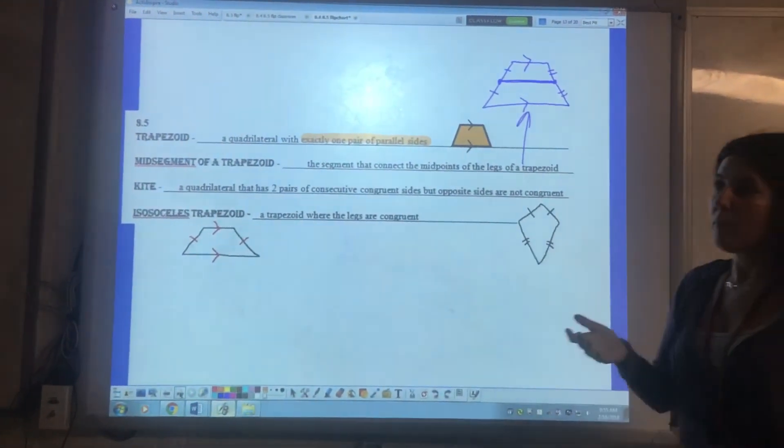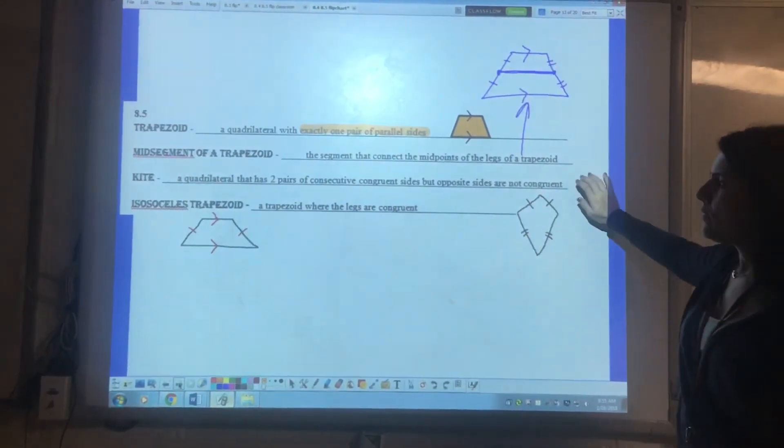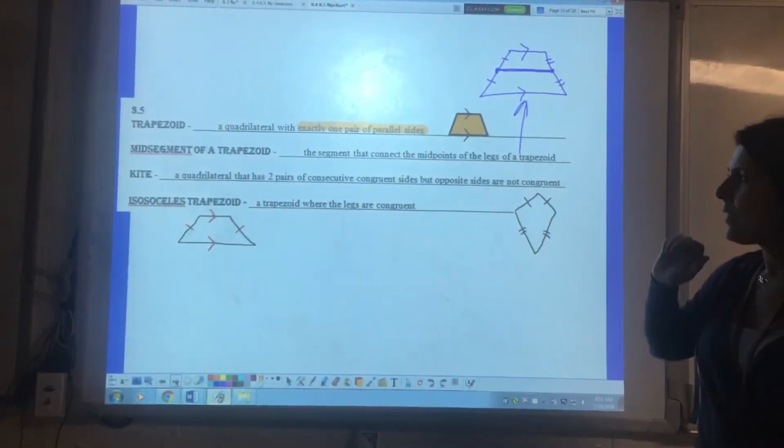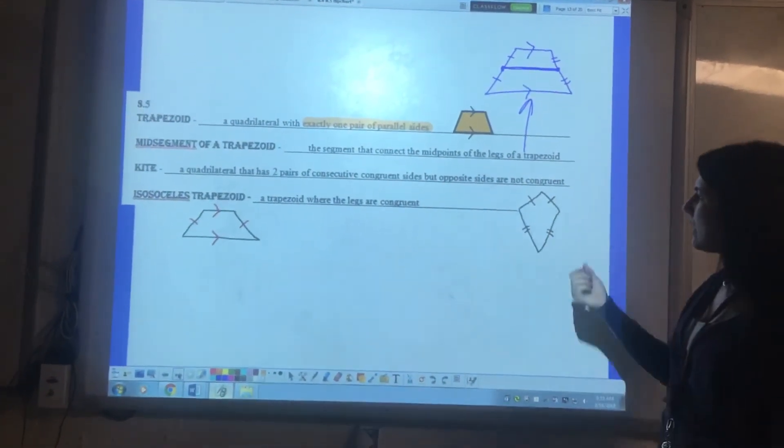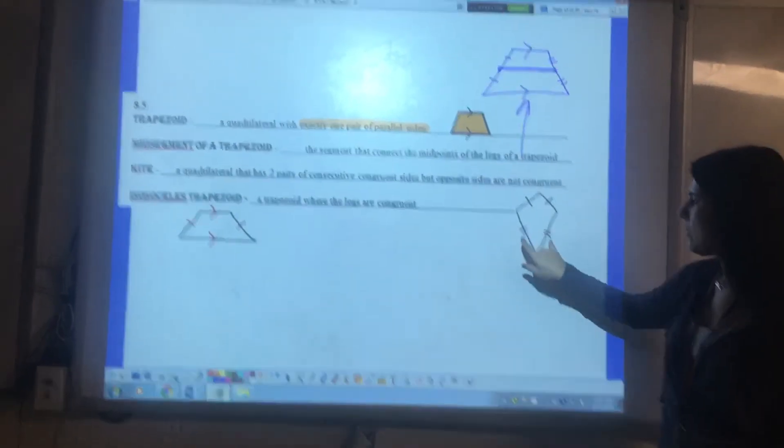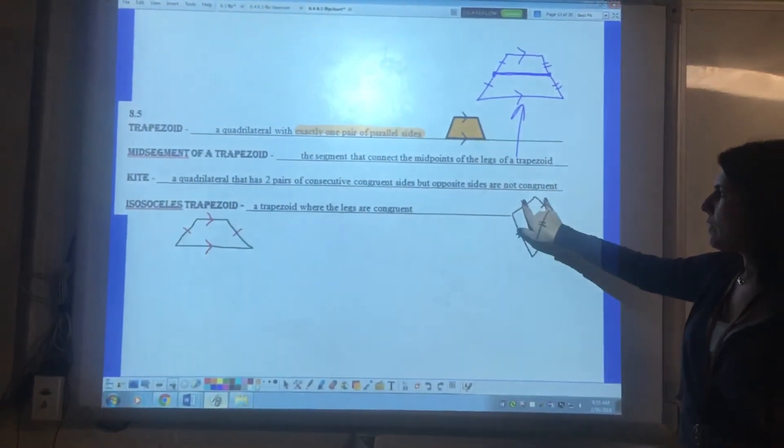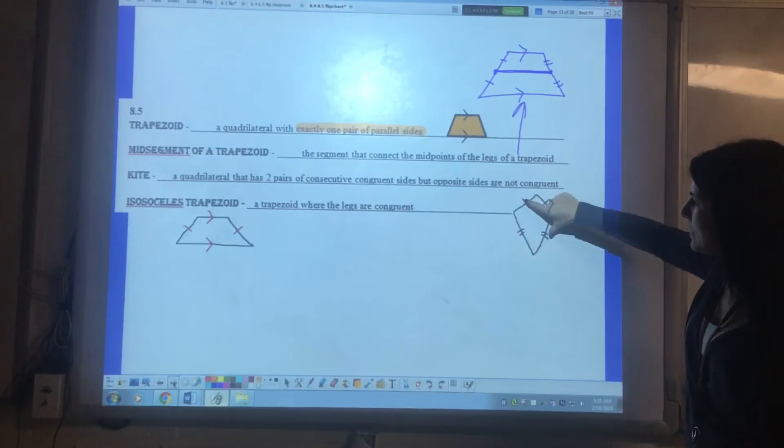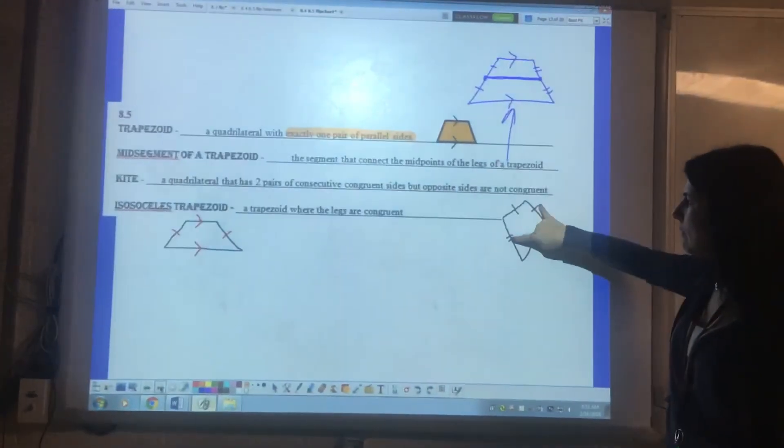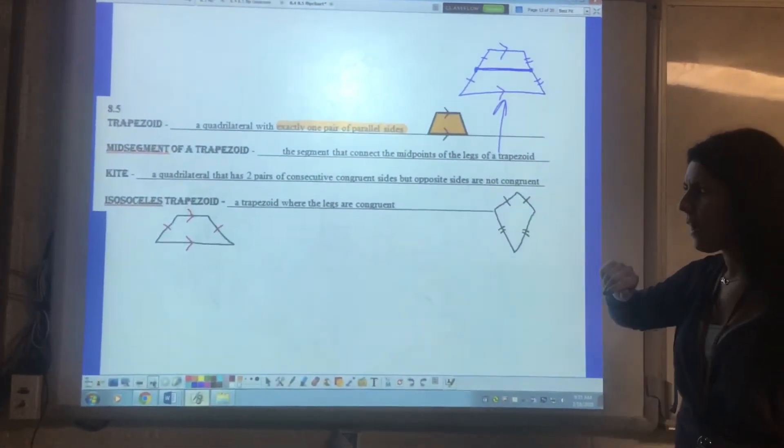A kite is exactly what you picture a kite to be but the formal definition says it has two pairs of consecutive congruent sides. Consecutive means next to each other. So these two are congruent. These two are congruent. But opposite sides are not congruent. These aren't congruent. These are congruent. So make sure you're aware of that.